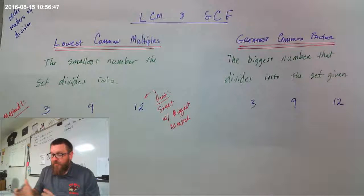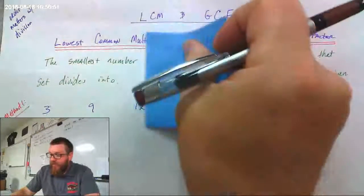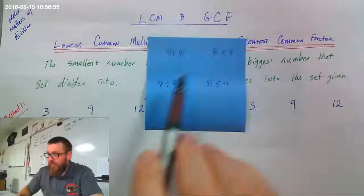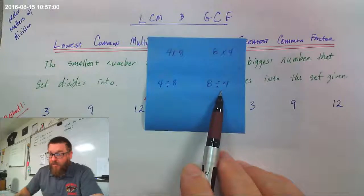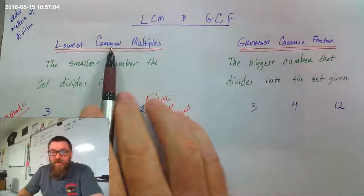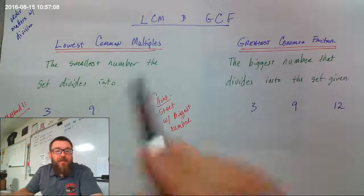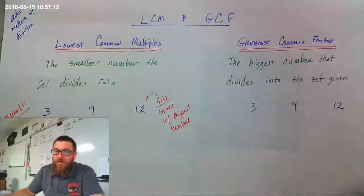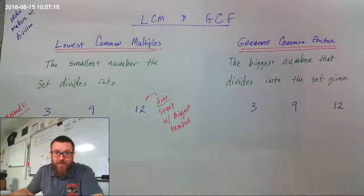When you're talking about multiplying, it doesn't matter which order you multiply — 4 times 8 is the same as 8 times 4. However, 4 divided by 8 is completely different than 8 divided by 4. For the lowest common multiple, the numbers we have divide into another number. Whereas for the greatest common factor, the other number we're looking for divides into the numbers we're given.